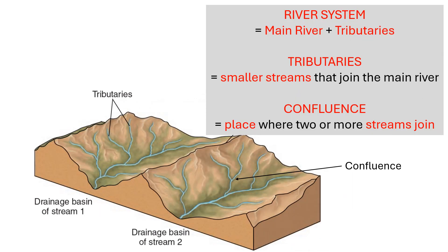A river system is made up of the main river and its tributaries, where tributaries refer to the smaller streams that join the main river. That river system is made up of the main river plus the smaller streams that join it. The place where two or more streams join the main stream is called the confluence.